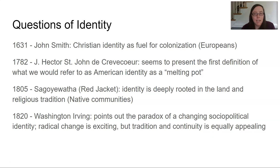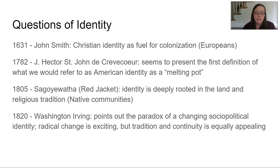In 1805, we don't only have the collective American voice asking what is the identity of America — we also have particular communities asking about the identity of their community. In this case, we have native communities, Red Jacket, whose native name is Sagayawatha — I'm sure it's much more beautiful in the native tongue — talking about how native communities' identity is deeply rooted in the land and in religious tradition. This is paired with a spiritual revival in indigenous communities at the same time as a Christian religious revival throughout New England.